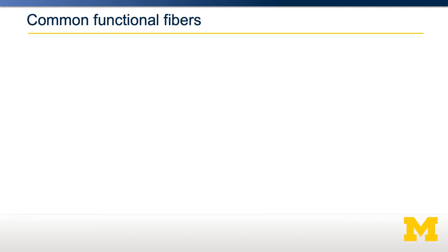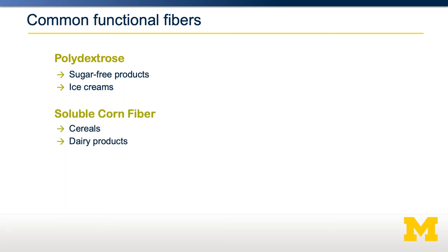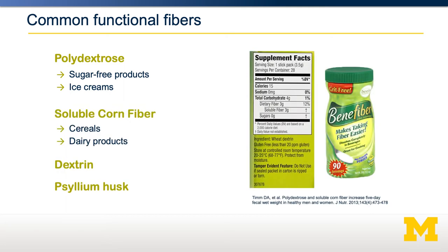Some common functional fibers include things like polydextrose, soluble corn fiber, dextrins, or psyllium husk. These can be provided within a food or even as a separate supplement. Looking at the supplement facts label for beta fiber, you can see that it lists 3 grams of dietary fiber — 12% — which is a functional fiber that has been added to this supplement.